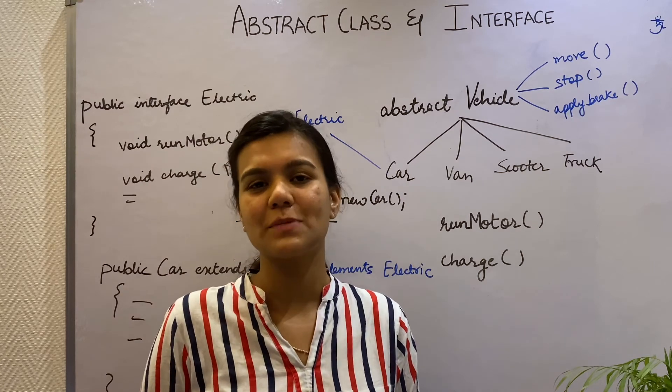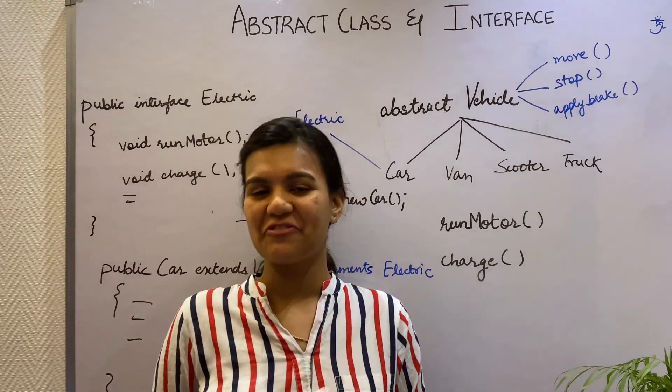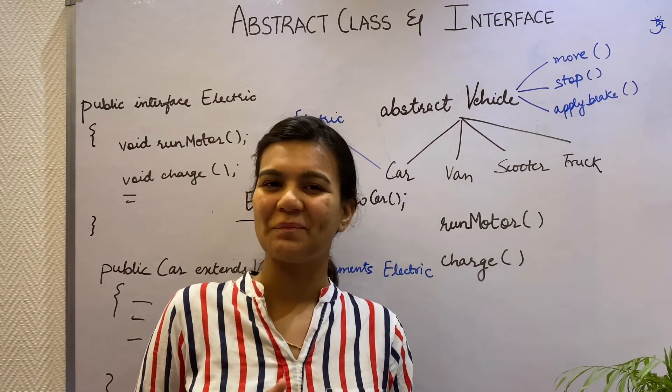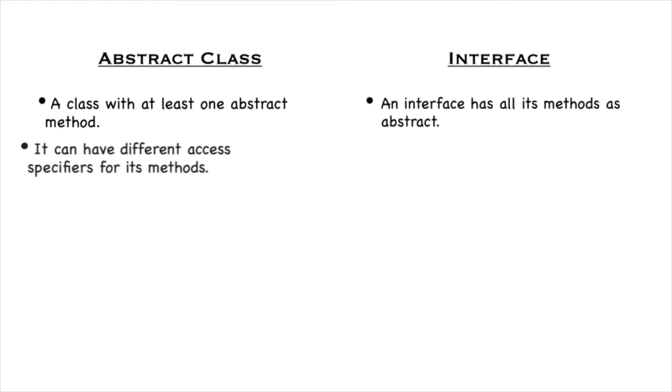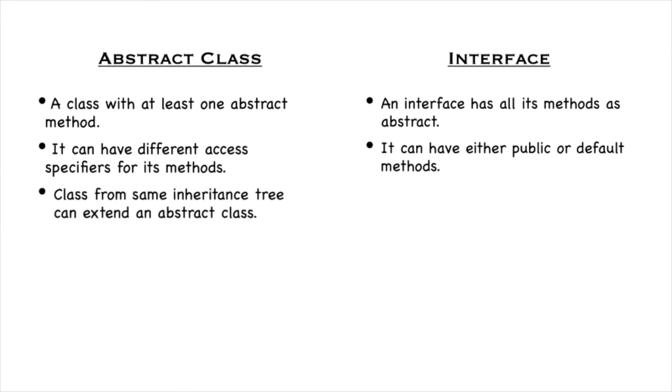By now, you must be thinking of all the differences between the abstract classes and interface and when to use what. Let's discuss that. An abstract class has to have at least one abstract method. While in an interface, all the methods are abstract. An abstract class can have different access specifiers, but an interface can have only public and default as its access specifier. A class from the same inheritance hierarchy can extend an abstract class, while classes from different inheritance hierarchies can implement an interface.